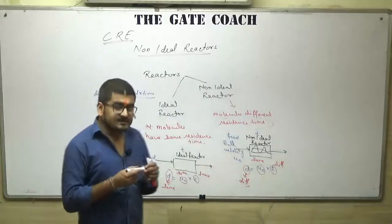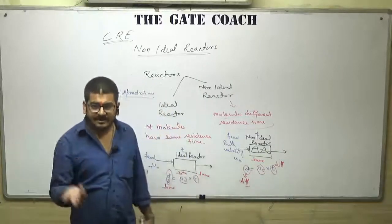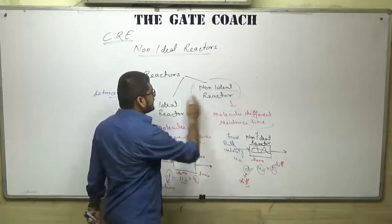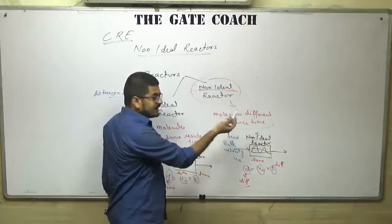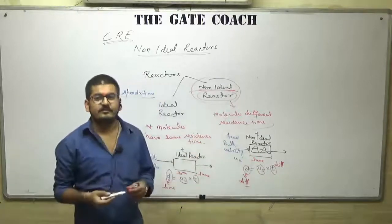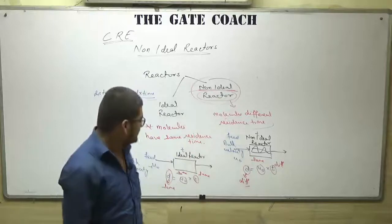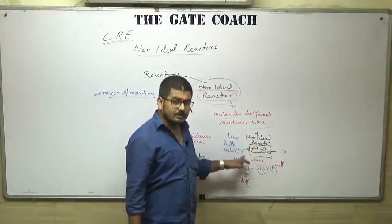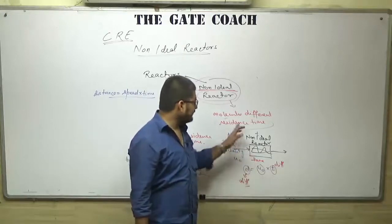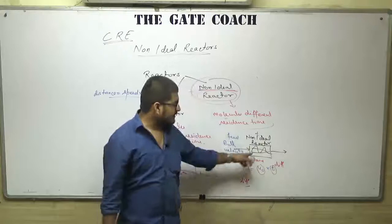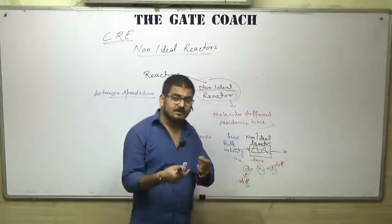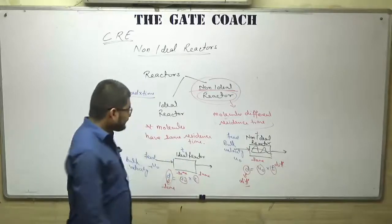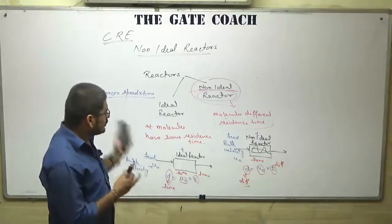The flow path is provided by the reactor and depends on the reactor geometry. That is why we use the term non-ideal reactor. This non-ideality is basically a characteristic of the reactor, not the reaction mixture or anything else. It should be clear why the residence time in a non-ideal reactor is different for different molecules — because the flow path of the molecules depends on the reactor geometry.